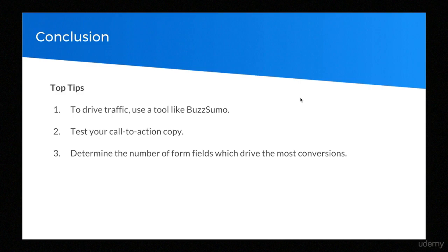Top tips. A top tip for driving traffic is to use a tool like Buzzsumo. If you're not familiar with Buzzsumo, just check out buzzsumo.com. It allows you to identify the most popular articles written by your competitors — it's something that we do all the time. If you can create something similar but better, then you're going to win. You know that the stuff your competitors are creating is already appealing to your target market. Create something similar but better.